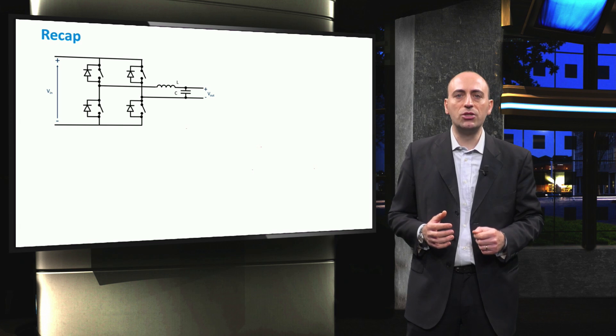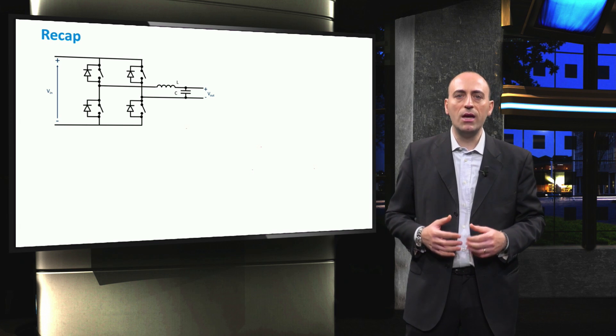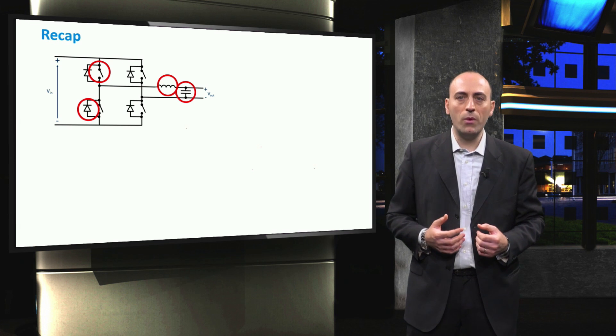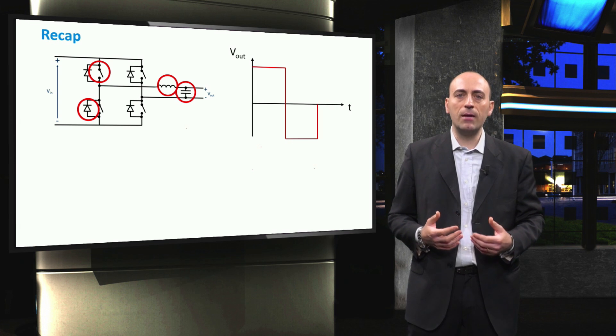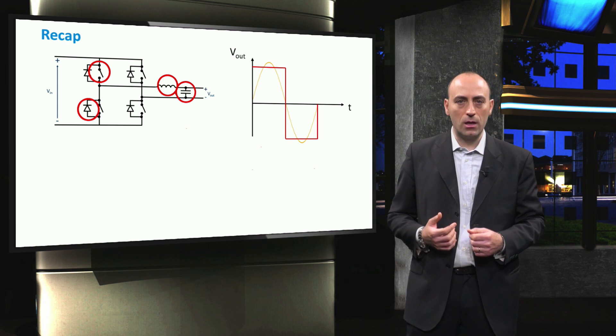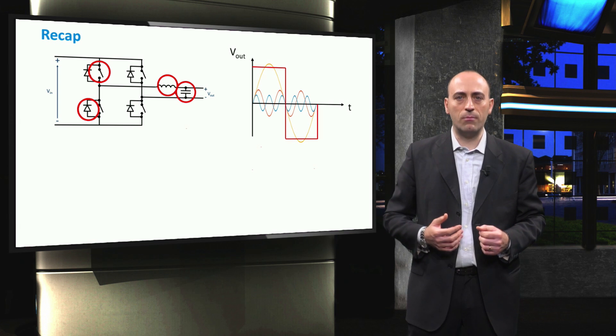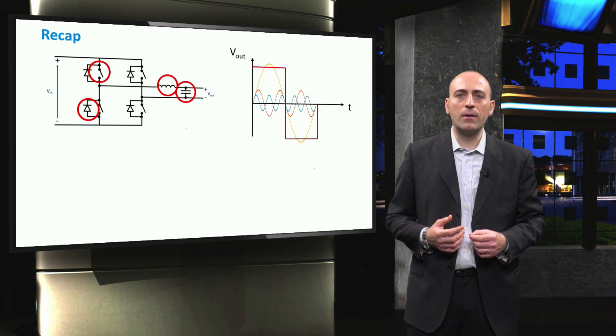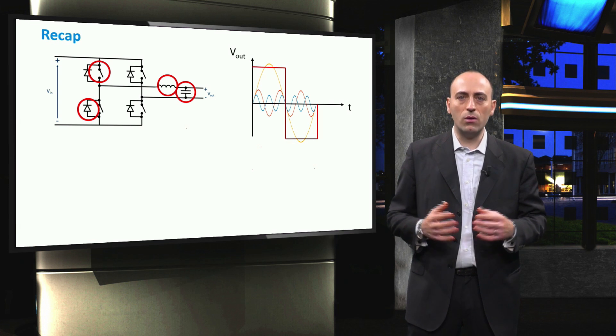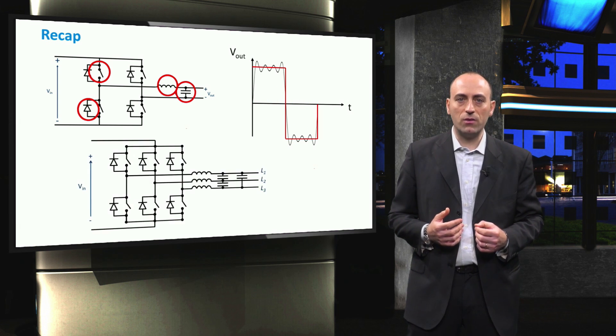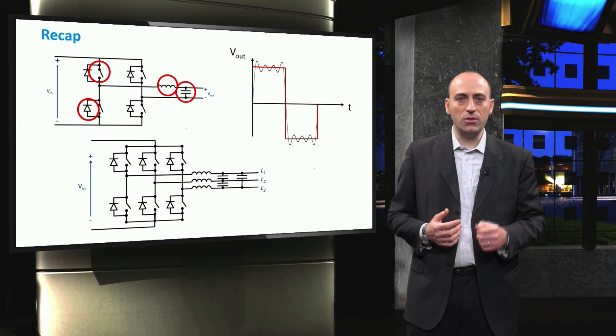To sum up, we saw that a H-bridge DC to AC converter is composed by switches, feedback diodes, inductor and capacitor. We also saw that the output waveform of the inverter is a pulse train that can be decomposed in a low-frequency sine wave, called the fundamental harmonic, and other high-frequency sine waves, referred to as higher-order harmonics. The square wave can be reconstructed by summing all its harmonics. Finally, we saw the typical topology of a three-phase inverter. Thank you for watching and see you in the next video.